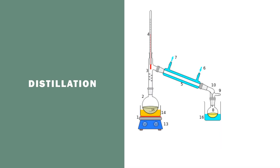A way to separate mixtures based on their boiling points is called distillation. In this basic distillation setup, you have a flask with a mixture of two liquids that have different boiling points. You'll use either a water bath or a sand bath to heat it up slowly, and whichever substance has the lower boiling point will start to evaporate first.